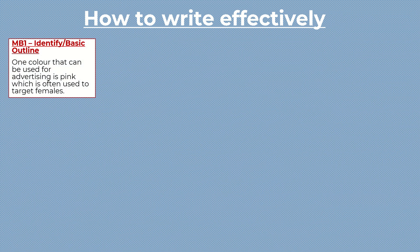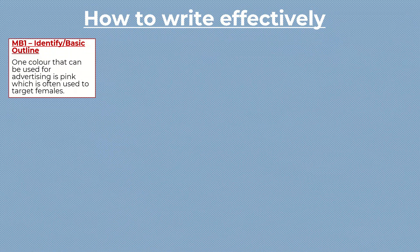The first example we are going to look at is just about colors — a very generalized bit of information related to business studies. To get mark band one, it usually says something like 'identify' or 'basic outline.' This one says one color that can be used for advertising is pink, which is often used to target females. Just highlighting that basic point would get you the bottom mark band, because you're not really explaining anything.